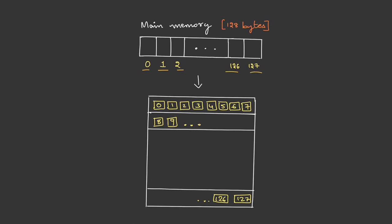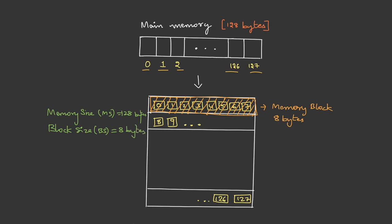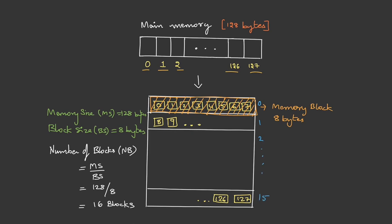Since data transfer is in terms of blocks, for convenience let's change the diagram. The 128 memory cells can be thought of as rows and columns, where each row has 8 memory cells — this row is the memory block, which in our example is 8 bytes. To find the number of blocks, we divide memory size by block size: 128 divided by 8 equals 16 blocks. If we number them, it will be 0, 1, 2, and so on till 15. These are called block index or block numbers.